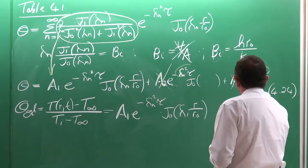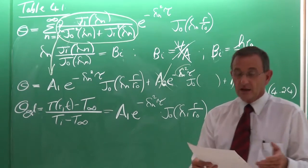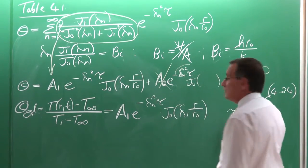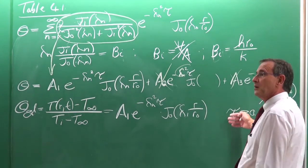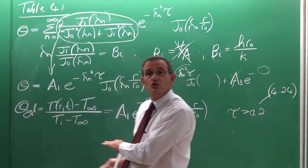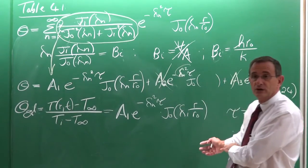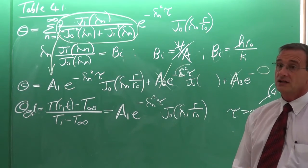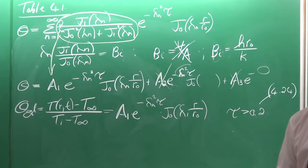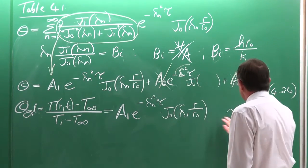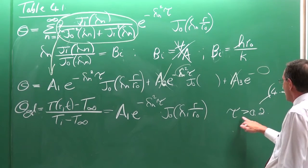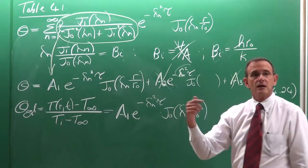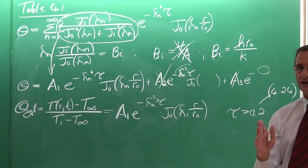Very important: τ must be larger than 0.2 to use the one-term approximation. Since we are solving for time (τ unknown), we assume τ > 0.2, perform the calculations, and then verify. From the textbook, if τ > 0.2 and only the first term is used, the error is less than 2% — which is quite accurate.